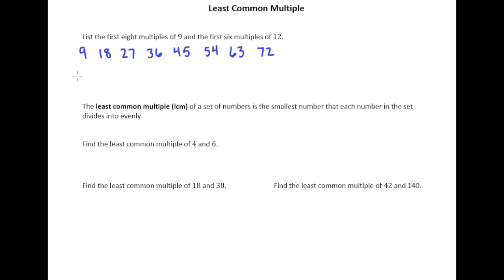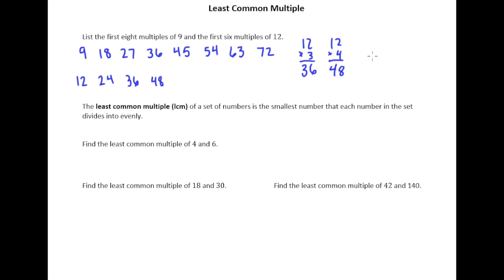Let's do the same thing for 12. 1 times 12 is 12, 2 times 12 is 24 — just from our knowledge of how many hours there are in a day. Beyond that you can start doing long multiplication, or you could just keep adding 12 each time, because multiplication is just repeated addition. Either way, we get 36, then 48, then 60, and finally 12 times 6 is 72.